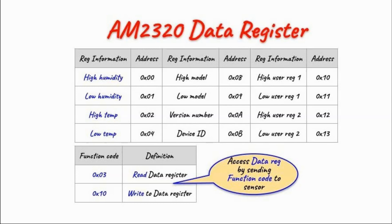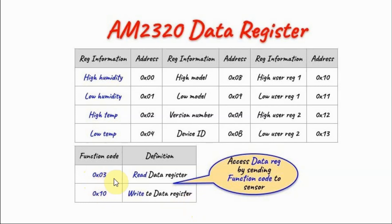In order to access the data register, we need to send the sensor a function code. One function code enables reading from the data register, while another enables writing into it. In this video, we will only be doing a data register read to obtain humidity and temperature information.